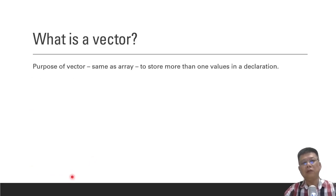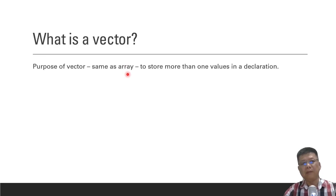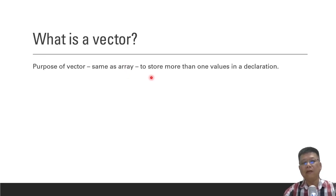Basically, when we want to use a vector, it is used similar to an array — totally the same as an array — but there is a little bit of difference. When you want to store more than one value in a variable, you can consider using an array or a vector.